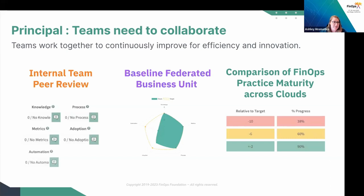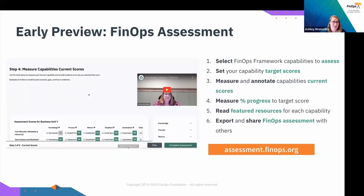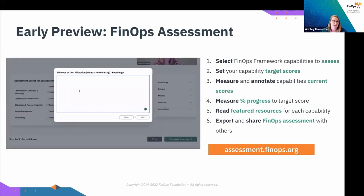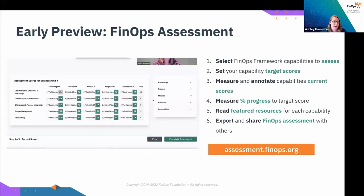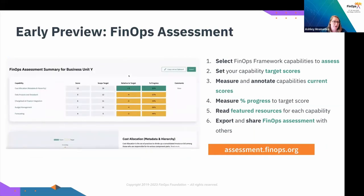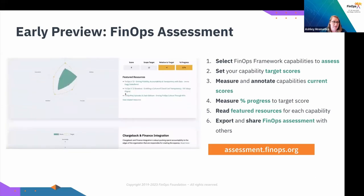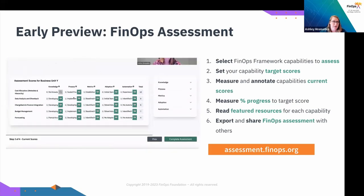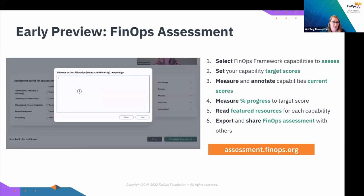This is our official announcement — we did a light test of this back in Amsterdam. You can now go to assessment.finops.org on your desktop and see this tool. You can log in so that you're able to save your different assessments, and we have a lot of features in the pipeline, including comparison of assessments. You'll select the capabilities you want to assess — all of them or just a few — set your target scores, and add comments so you know why you picked that score at that time. You also have a feature to share or download your assessment, and we'll have more features coming before and after FinOps X.